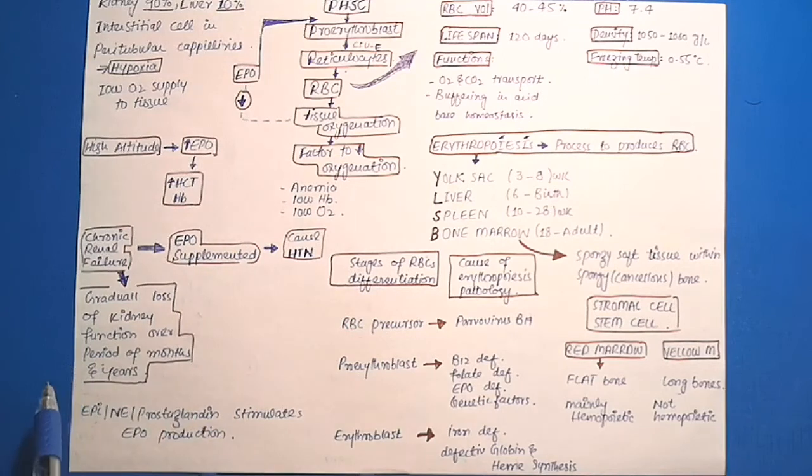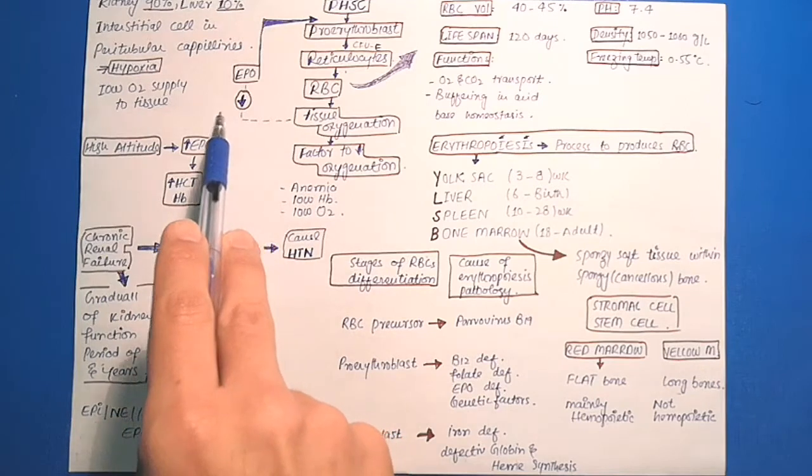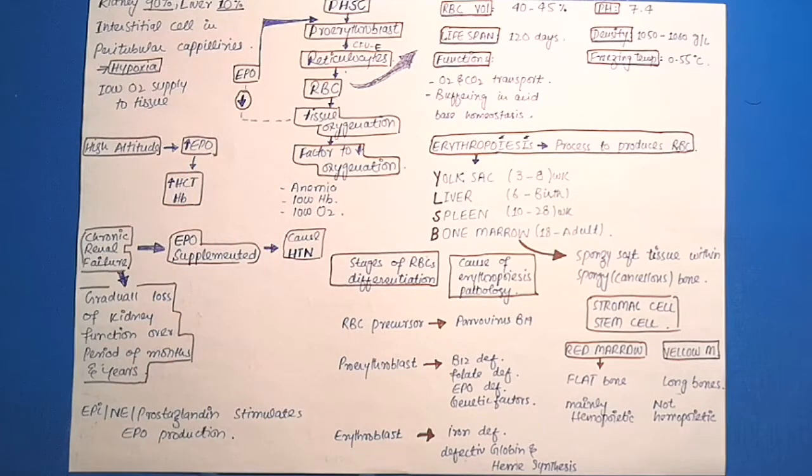When a person is placed in a low oxygen state, erythropoietin is formed within minutes and hours, but red blood cells will not appear until 5 days. From this, we can determine the importance of erythropoietin.